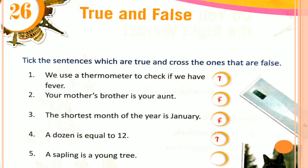Number 5: A sapling is a young tree. Is it true or false? Yes, a sapling is a young tree, so it is a TRUE sentence. Very good, you all are writing with me.